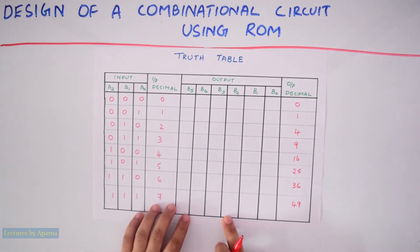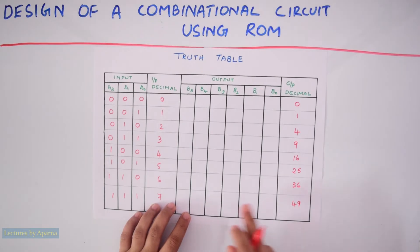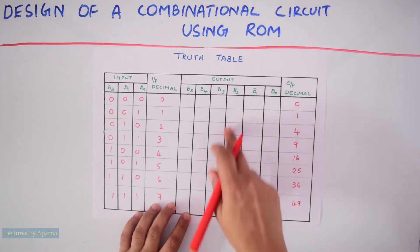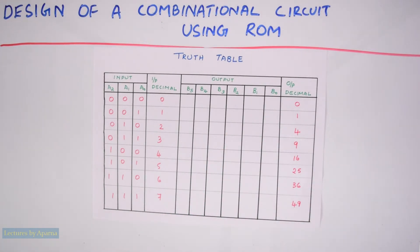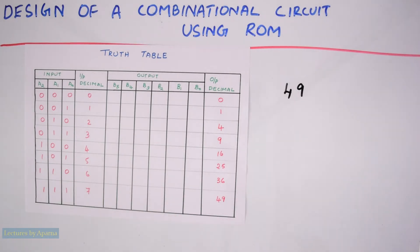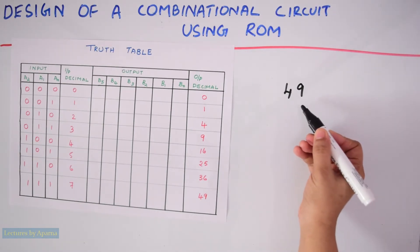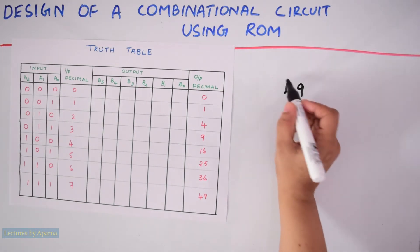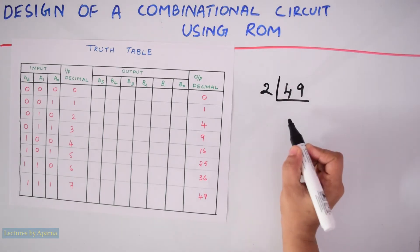Now, in this column, I have to write the binary equivalent of these decimal numbers. First, I am taking number 49. If you want to know binary to decimal and decimal to binary conversion in detail, I have made a video on it. I will link it in the description box. Here I have to convert 49 into its binary form.